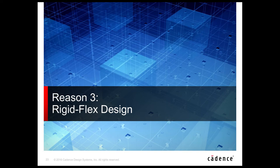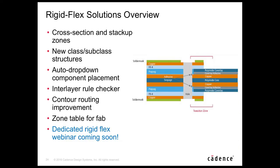Reason number three is rigid-flex design — a major feature in 17.2 well-deserving of its own webinar. Key highlights include changes to cross-section and zones, new class/subclass structures, auto drop-down of component placement across zones, a new interlayer rule checker, and improvements to push-and-shove routing.